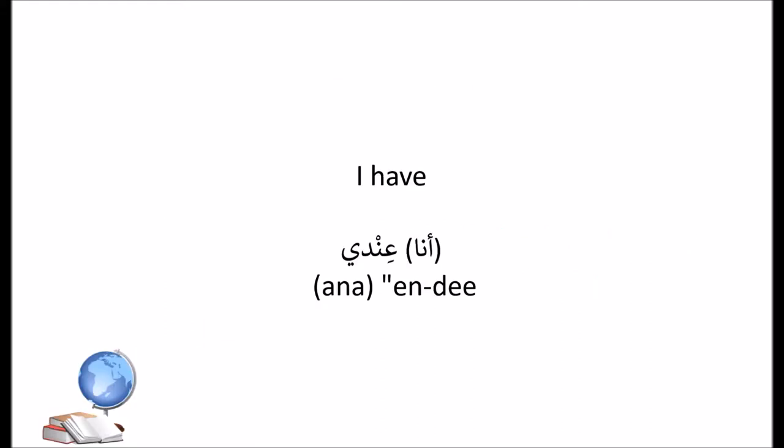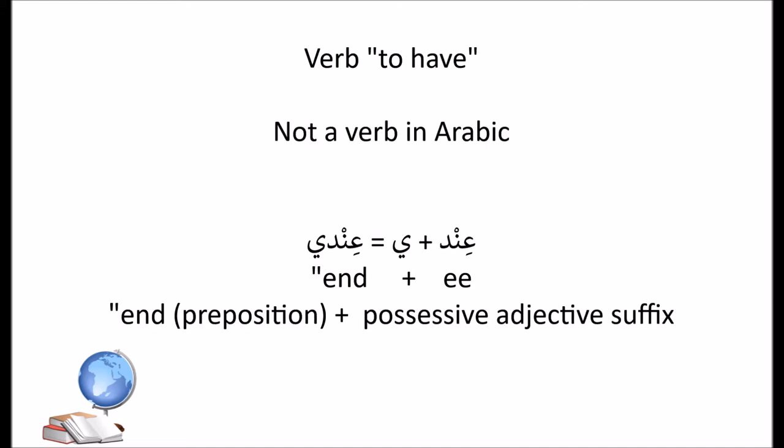I have — أنا عندي. The verb 'to have' in Arabic is actually not a verb. It's a preposition عند, and then we add to it the possessive adjective suffix, which is 'i' in the case of أنا or 'I'. So it becomes أنا عندي.